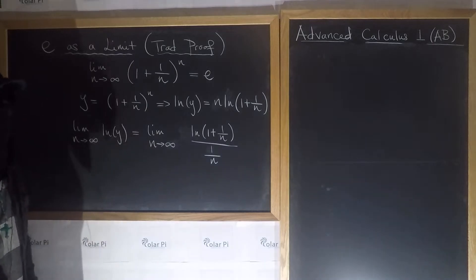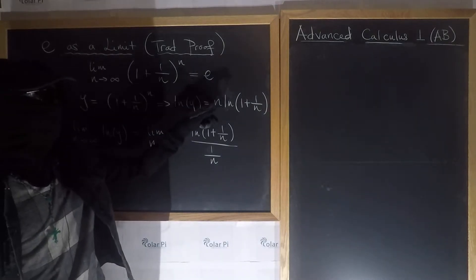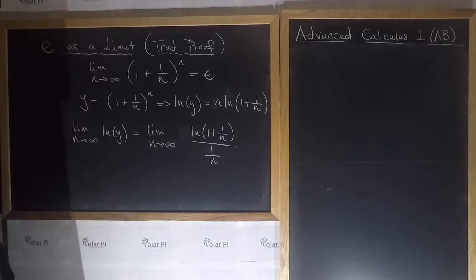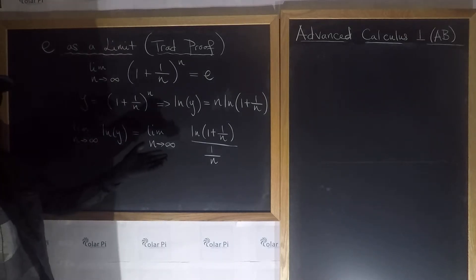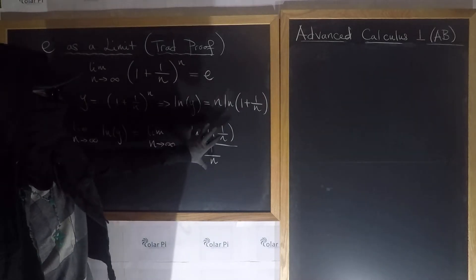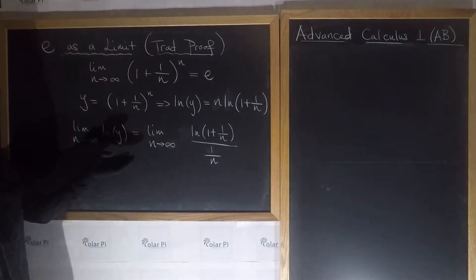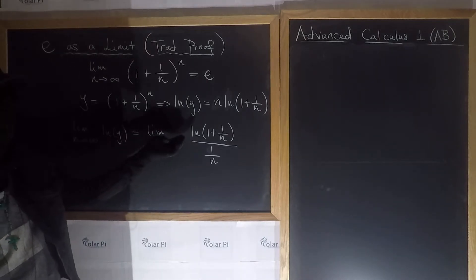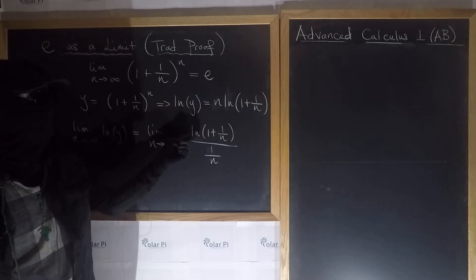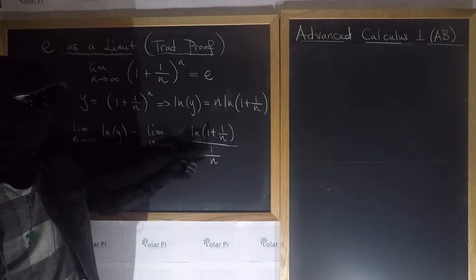Because now as I send n to infinity, what am I going to get? ln(1 + 0), so ln(1) which is 0 over 0. I get 0 over 0, which is an indeterminate form that allows me to use L'Hopital's rule.